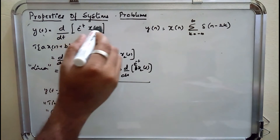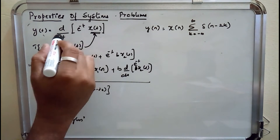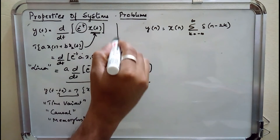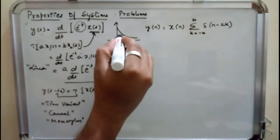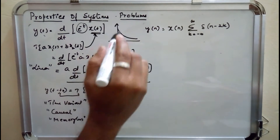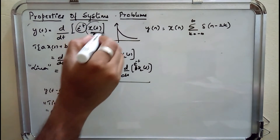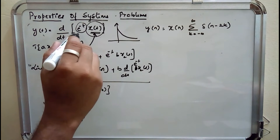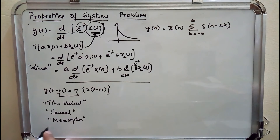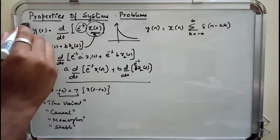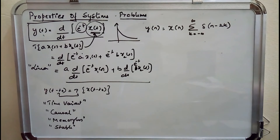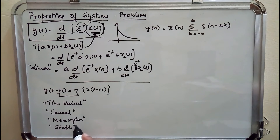For stability, we assume that x(t) is bounded. We know that e^(-t) is a decaying exponential, so it will eventually lead to zero as t tends to infinity, meaning it is bounded. Since x(t) is also bounded, the differential of the product of two bounded terms will also be bounded. So the system is stable. In summary, y(t) = d/dt[e^(-t)·x(t)] is linear, time variant, causal, memoryless, and stable.